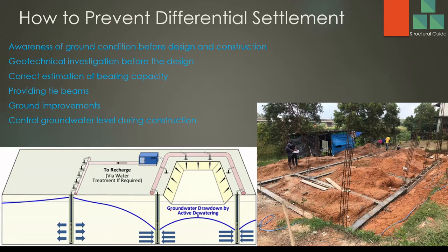Tie beams can be provided to control both upward and downward movement to a certain extent. This is especially important with expansive soil, which can cause upward movement that reverses the direction of stresses — sagging becomes hogging and hogging becomes sagging. Reinforcement must be designed accordingly to avoid beam failure due to inadequate reinforcement. If expansive soil is present, upward movement must be considered in the design.